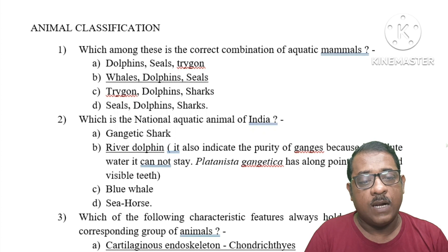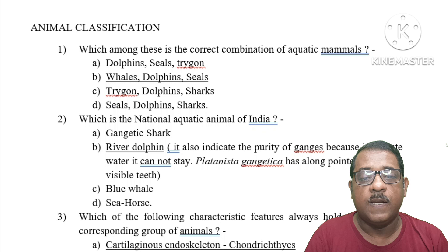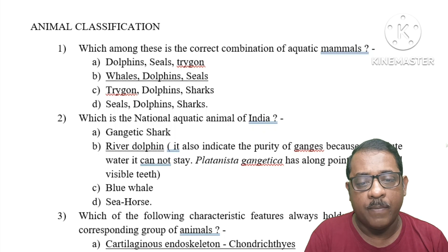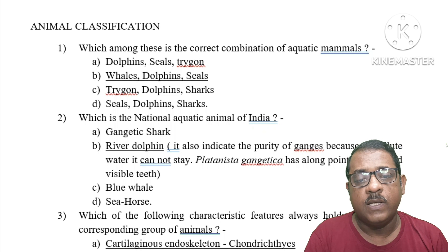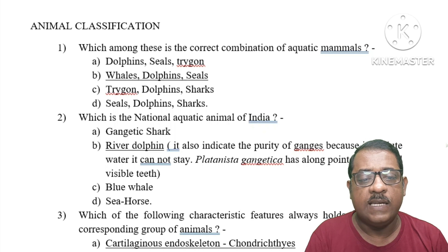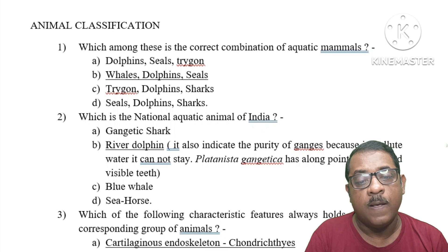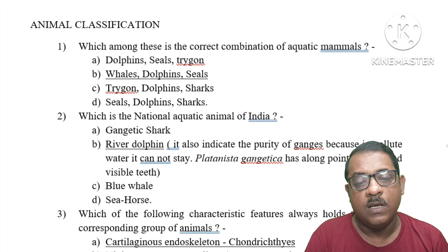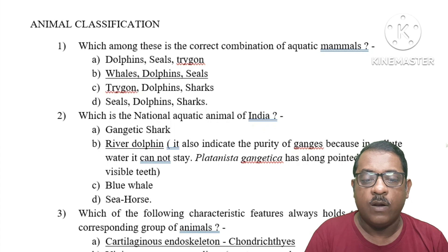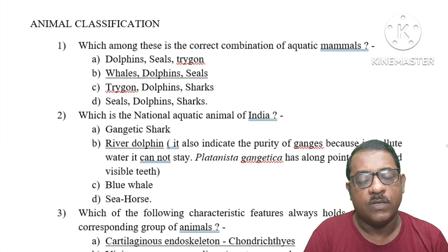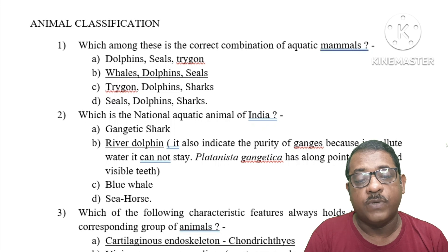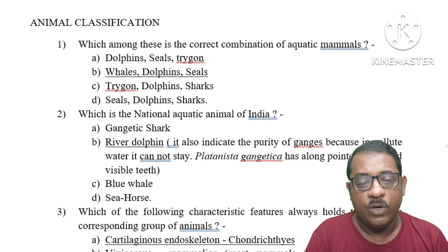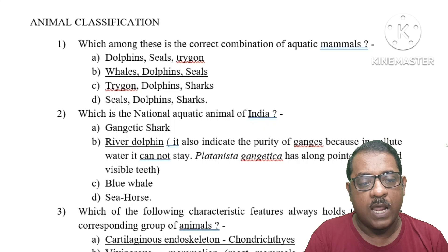Animal Classification, Question 1: Which among these is the correct combination of aquatic mammals? Option A: Dolphins, Gills, Trigon — Trigon is not a mammal. Option B: Whales, Dolphins and Gills — these 3 are mammals. Option C: Trigon, Dolphins, Shark. Option D: Gills, Dolphins and Shark. The right answer is Option B: Whales, Dolphins and Gills, as all three are mammals.